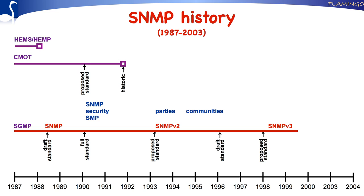In April 1999, the SNMP v3 proposal was further moved towards draft standard. Finally, in December 2002, SNMP v3 became full Internet standard. At the same time, the SNMP v2 protocol operations, upon which SNMP v3 was built, were also moved to full Internet standards level. Now that a secure version of SNMP finally existed, the community-based SNMP v2 variant was moved to historic status.